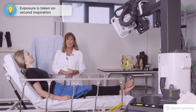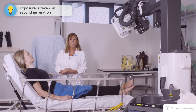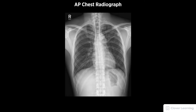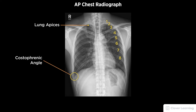She's shielded and we're going to take the breathing instructions on second inspiration. A diagnostic portable AP chest radiograph should be free of motion and rotation. Include both lung apices and both costophrenic angles. There should be visualization of eight to nine posterior ribs above the diaphragm.